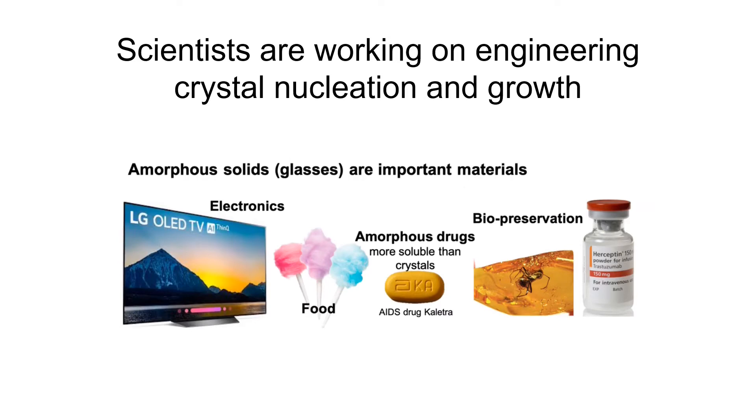Glasses are important materials. For example, some electronics are made into glasses and used in OLED. Cotton candy is sugar glass. And in pharmaceutics, some drugs are developed in a glass state. In some cases, these glasses show advantages over crystals. And that's why scientists are working on better inhibiting crystal nucleation and growth to produce better glasses.